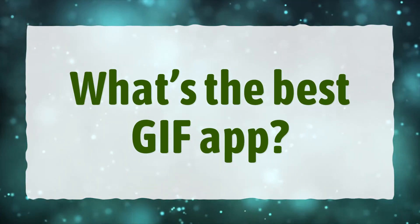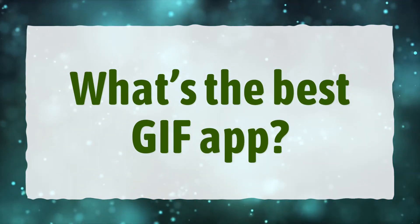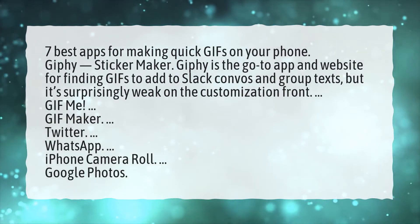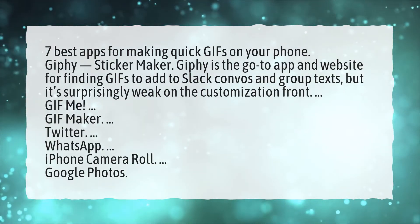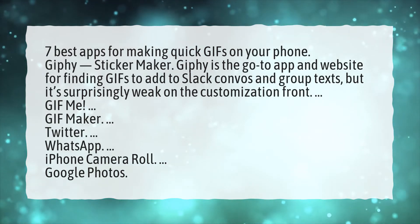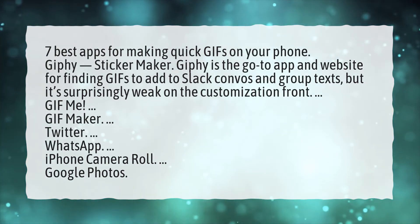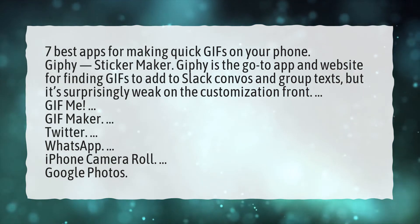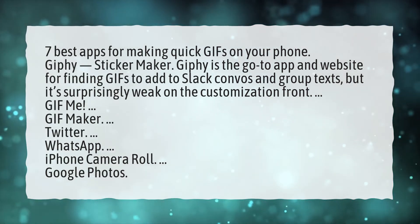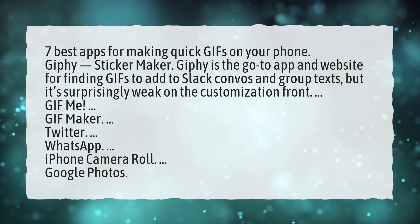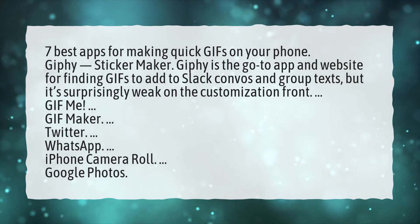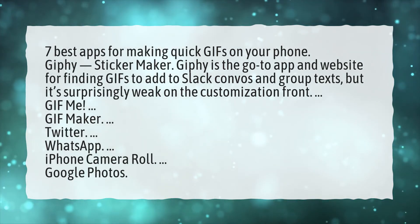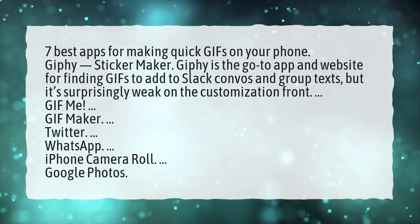What's the best GIF app? 7 Best Apps for Making Quick GIFs on Your Phone: Giphy Sticker Maker. Giphy is the go-to app and website for finding GIFs to add to Slack convos and group texts, but it's surprisingly weak on the customization front. Giphy Me, Giphy Maker, Twitter, WhatsApp, iPhone Camera Roll, Google Photos.